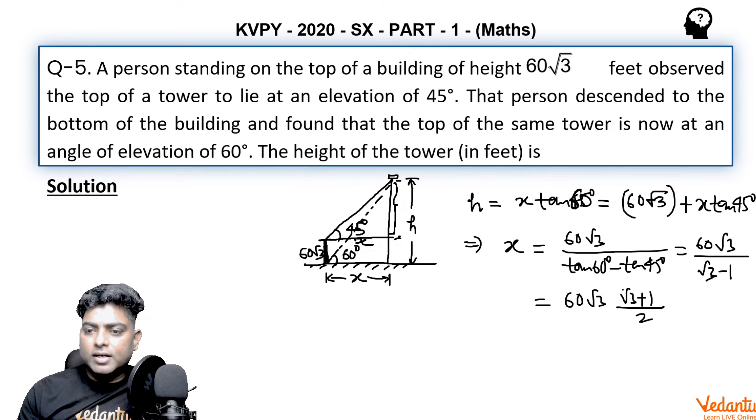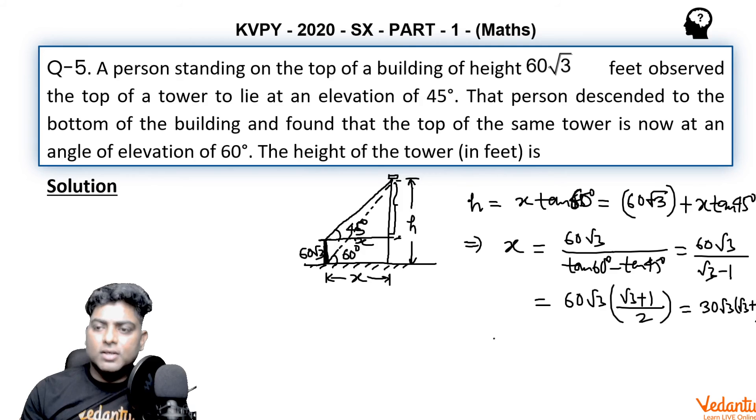You can rationalize the denominator, so finally we are getting x to be 30√3 times (√3 + 1).